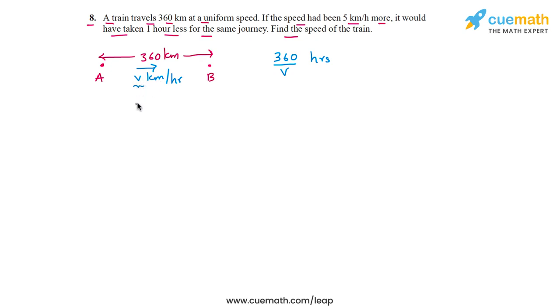But this problem also says that if instead of going at v kilometers per hour, if the train had gone slightly faster at v plus 5 kilometers per hour, then the time taken would have been one hour less. So at this speed, at v plus 5, the train would have taken 360 by v plus 5 hours, distance by speed again.